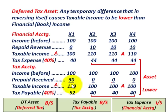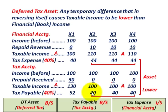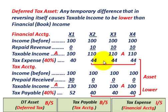So taxable income for tax accounting is $130,000 in year one and $100,000 for years X2 through X4. Tax payable at 40%: $52,000 in year one and $40,000 for each of the next three years. You can see that in the later years, tax payable is lower — $40,000 — versus tax expense of $44,000 for financial accounting.